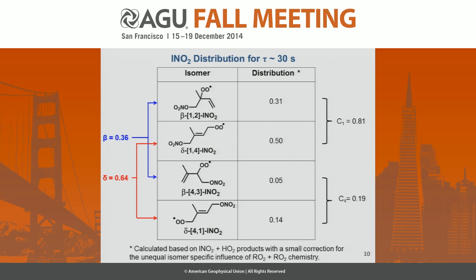This is the RO2 distribution. We use the products seen from RO2 plus HO2 chemistry to back-calculate the RO2 distribution, at an RO2 lifetime of about 30 seconds in this study. We don't yet know whether the RO2 distribution is affected by RO2 lifetime, though Peters et al. showed theoretically that for the OH system the RO2 distribution is affected by lifetime. Dr. Kiergaard of the University of Copenhagen will calculate theoretical results for us. At an RO2 lifetime of about 30 seconds, NO3 adds dominantly to the C1 carbon of isoprene rather than the C4 carbon, and we're mostly forming the delta RO2 species rather than the betas. The nitrates have an even higher delta-to-beta ratio because many of the beta species react with HO2 and then decompose rather than forming nitrates.